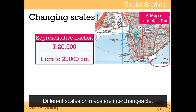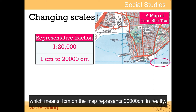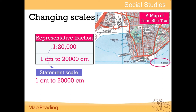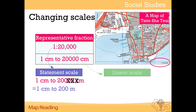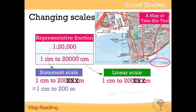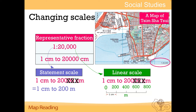Different scales on maps are interchangeable. The scale of Map C is shown in numbers: 1 to 20,000, which means 1 cm on the map represents 20,000 cm in reality. We may change it into a statement scale, or into a linear scale by the same way — put the correct unit and numbers on a straight line with a few sections of 1 cm.